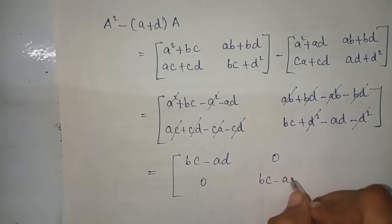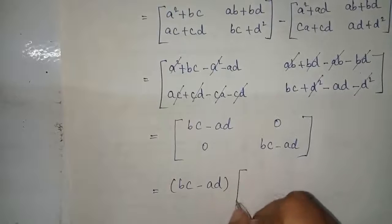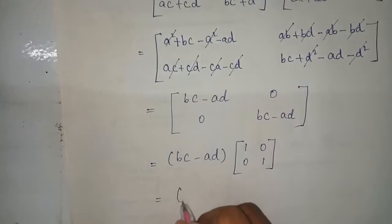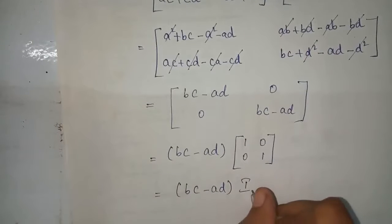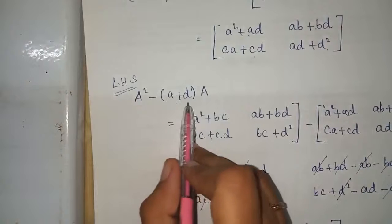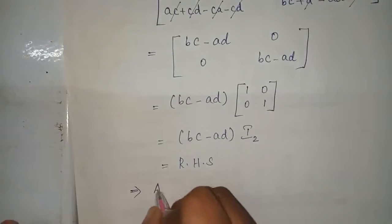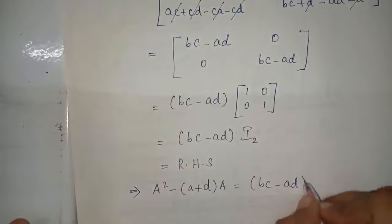The remaining terms are bc minus ad, 0, 0, bc minus ad. Taking (bc minus ad) as common factor gives the matrix 1 0 0 1, which is the identity matrix. Therefore A squared minus (a plus d)A equals (bc minus ad) times I₂. Hence proved.